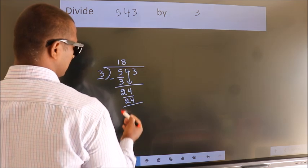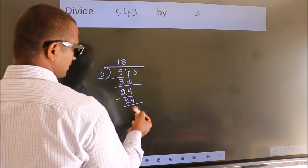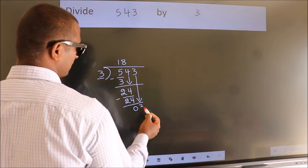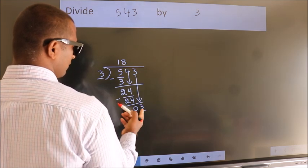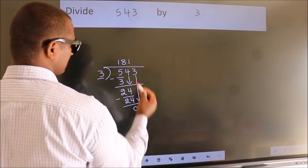Now, we subtract. We get 0. After this, bring down the beside number. So, 3 down. So, 3. When do we get 3? In 3 table, 3 1s 3.